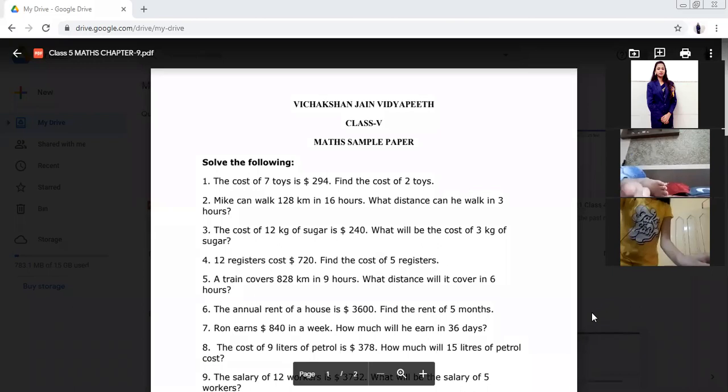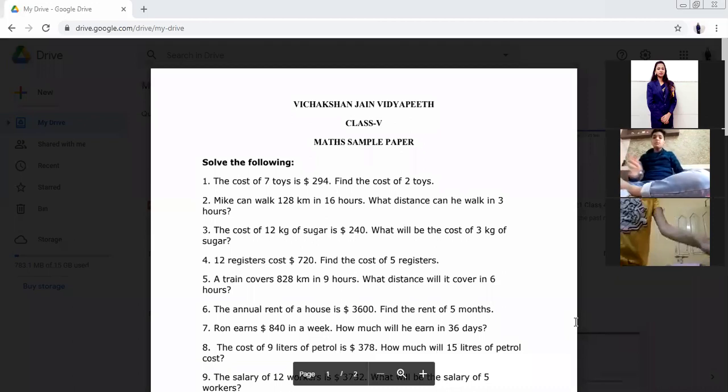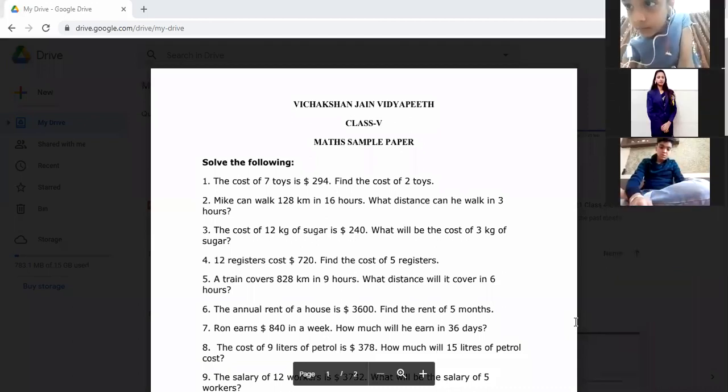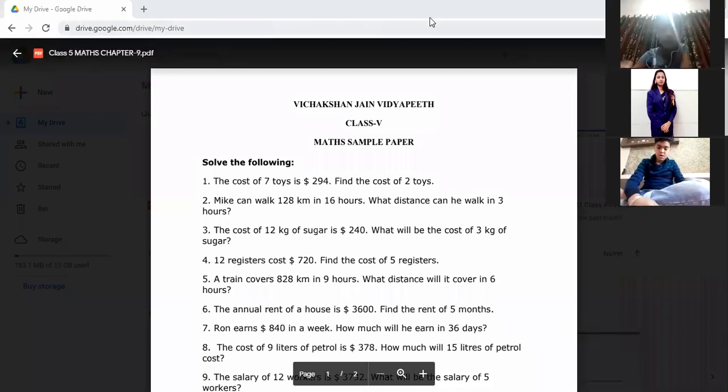This is the sample paper. You have to solve this in your copy and after solving you have to make PDF and upload in VJP LMS. Write down today's date, give heading sample paper. At present the strength is 21 students, total 22 including me. So 21 PDFs should be uploaded at 3:30.